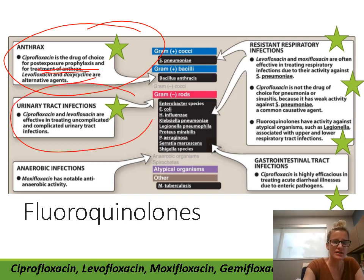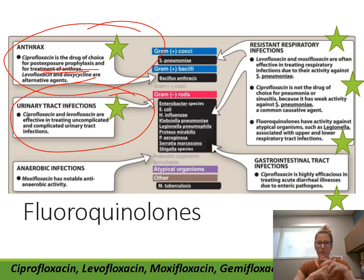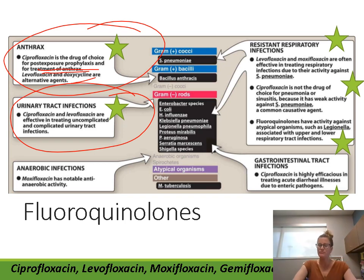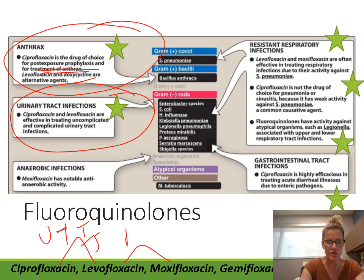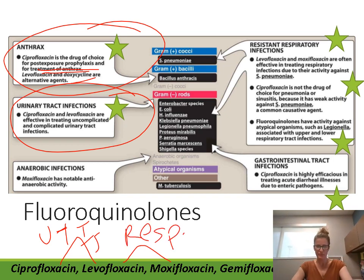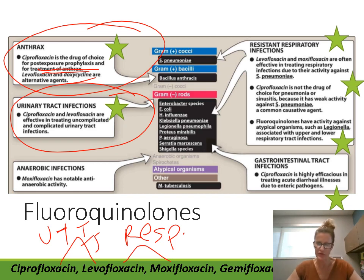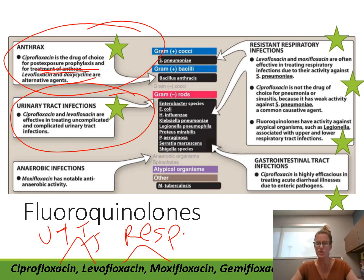For urinary tract infections, ciprofloxacin and levofloxacin are both used — Cipro is probably used more commonly. Note that moxifloxacin is not used for UTIs. Both Cipro and Levo are considered urinary fluoroquinolones. Keep in mind though, these are not first-line; we have other agents we'll discuss later that are preferred first-line for UTIs.